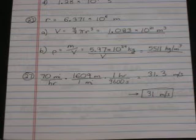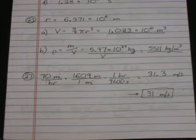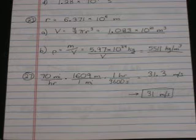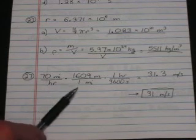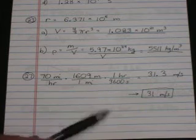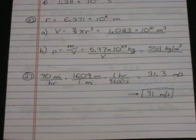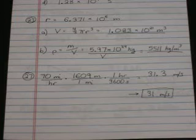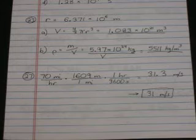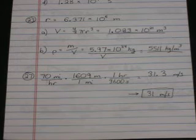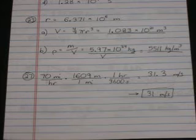Number 27. A simple unit conversion, 70 miles per hour. Express this in meters per second. This is just like one we've done earlier. You're going to multiply to turn miles into meters by doing 1,609 meters over one mile. Multiply by one hour over 3,600 seconds to turn hours into seconds. And we get 31.3 meters per second. Since the problem was stated to two significant figures, I'm going to give the answer to two significant figures. So 31 meters per second is appropriate rounding.